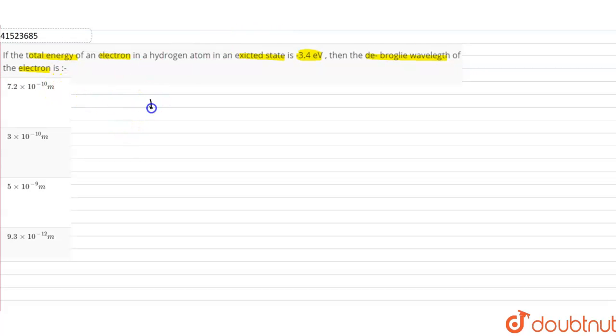Total energy is given as minus 3.4 eV. Now, total energy is also equal to negative of kinetic energy. How can we solve for kinetic energy? Kinetic energy is equal to negative of total energy. Removing the minus sign, kinetic energy equals negative of total energy. Since total energy is minus 3.4 eV...